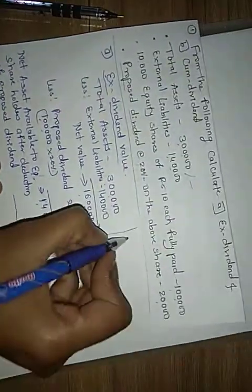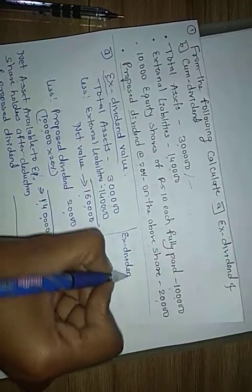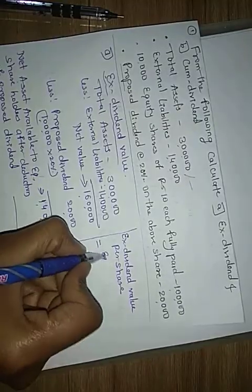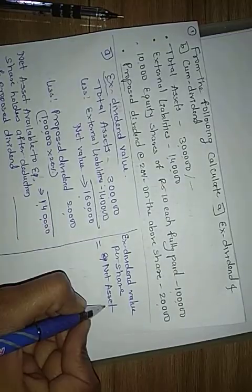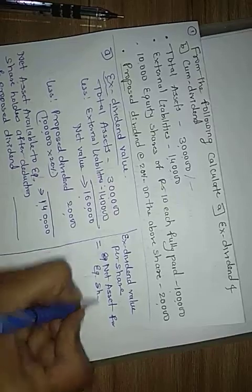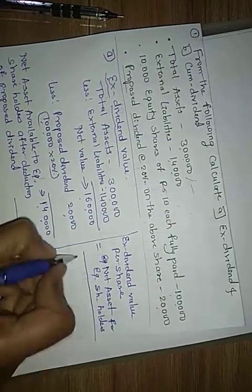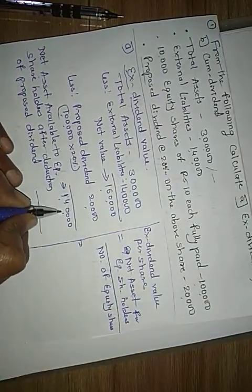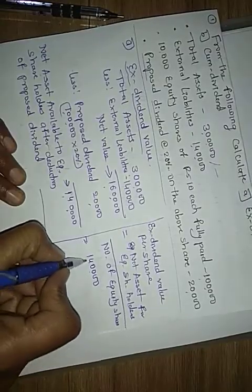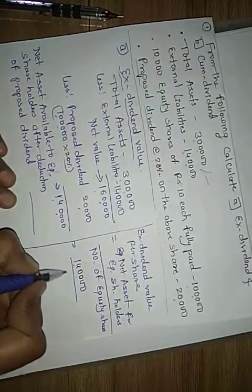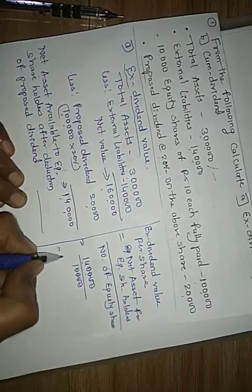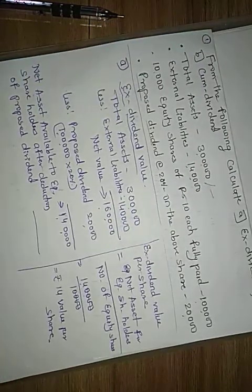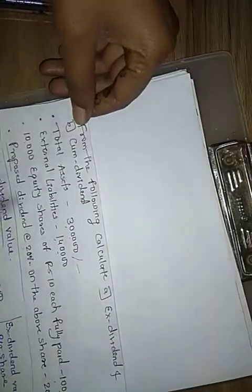Now we find the x-dividend value per equity share. The formula is: net assets available to equity shareholders divided by number of equity shares. Net assets available is rupee one lakh forty thousand, divided by ten thousand equity shares. This gives us rupees fourteen per share. This completes the calculation of x-dividend.